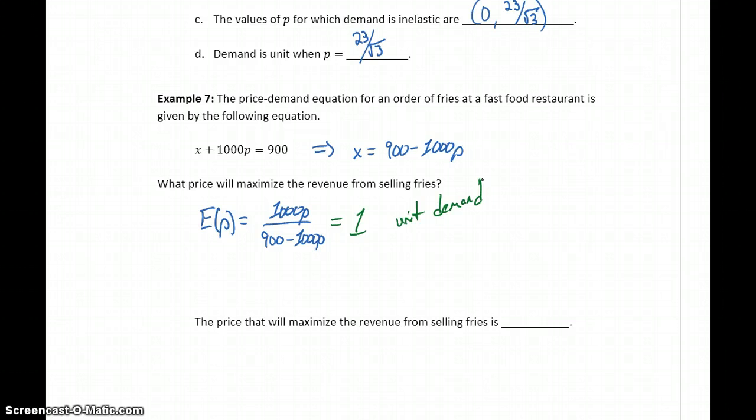Meaning whether we increase price or decrease price, demand will change by the same amount so that won't affect our revenue. So taking that demand function, setting it equal to 1 should yield a price point of 45 cents or 0.45. So the price that will maximize revenue from selling fries is, in this case, 45 cents because that's the price point where we hit that unit demand.